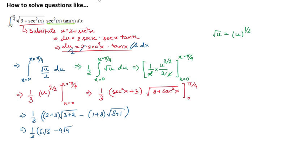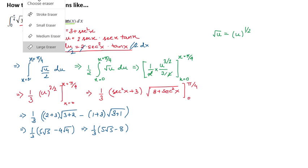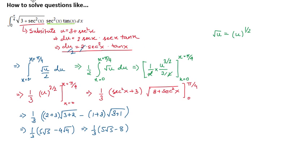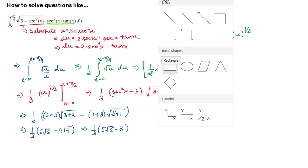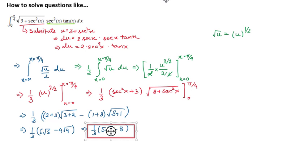We can write this equals 1 third of 5 root 5 minus 8. So that is it. That is the integral which we are asked. The integral of under root 3 plus secant square x secant square x tan x dx over 0 to pi by 4 interval is equal to this thing, 1 third of 5 root 5 minus 8. This is our answer.